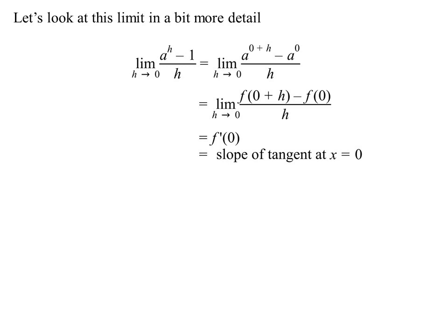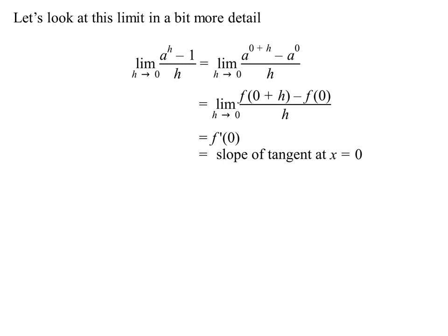So I'm saying, well, this will be the one for the specific situation where x equals 0. So it's the slope of the tangent at x equals 0. So if I want to differentiate A to the power of x, then I know the derivative is going to be m, the slope, times A to the power of x.